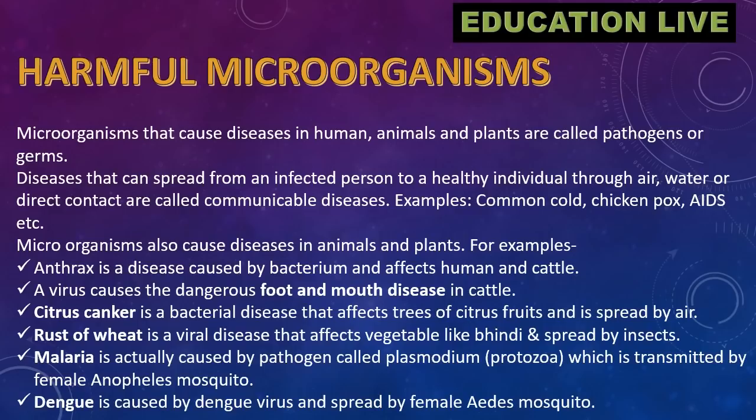Diseases that can spread from an infected person to a healthy individual through air, water, or direct contact are called communicable diseases. Examples include common cold, chickenpox, AIDS, etc. Microorganisms also cause diseases in animals and plants.